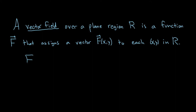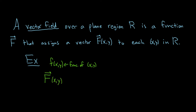One of the most prominent and important examples of a vector field is the following. Let's say we have f of x, y — this is simply a function of two variables. What we can do, assuming this function is differentiable, is create a new function, big F of x, y. We're going to define a vector field to be the gradient of this function.